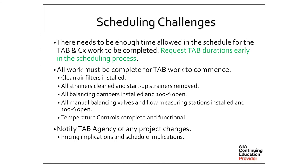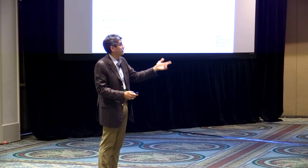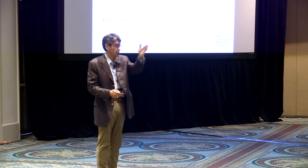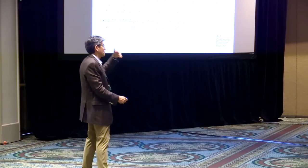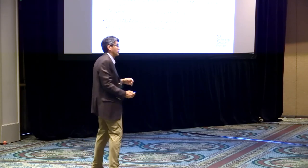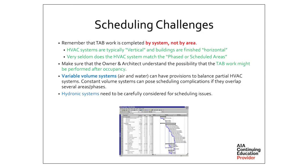Scheduling challenges: as commissioning becomes more prevalent on projects, scheduling is getting much better because the commissioning agent gets involved early and up front, saying 'I need this much time, TAB needs this much time, so when you turn over at X point I need this much time before that turnover.' Getting involved in document reviews early helps a lot to bring up scheduling. The best scenario is getting scheduling going before the general contractor is even hired.